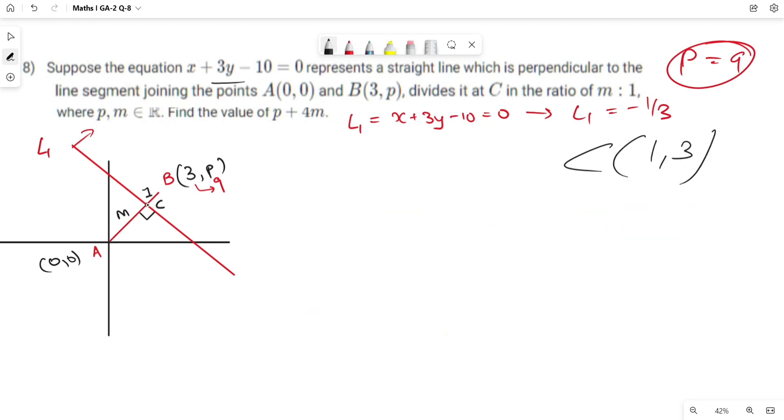Now by section formula, C point divides AB in m:1 ratio. So coordinates of C is m multiplied by B's coordinates (3,9) plus 1 multiplied by A's coordinate (0,0) divided by m plus 1, giving (3m/(m+1), 9m/(m+1)).